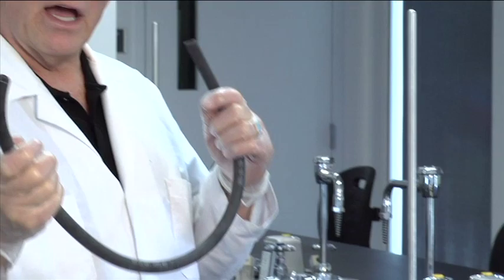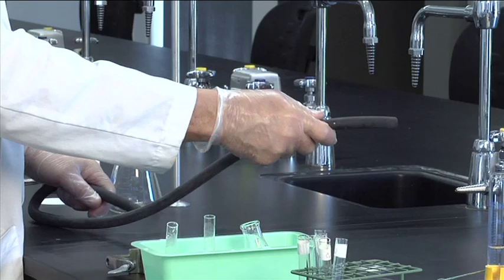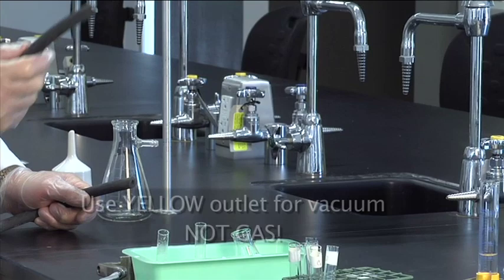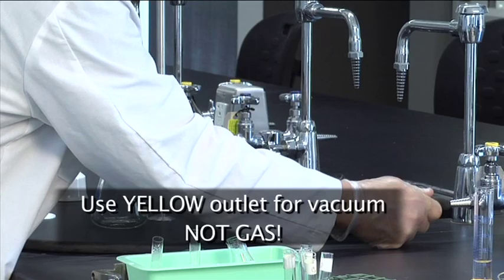We have two outlets on the bench. One of them is labeled gas. One of them is labeled vacuum. Which do you want to choose? We've done the one where it's hooked up to gas. You don't want gas. You want the yellow one, vacuum.